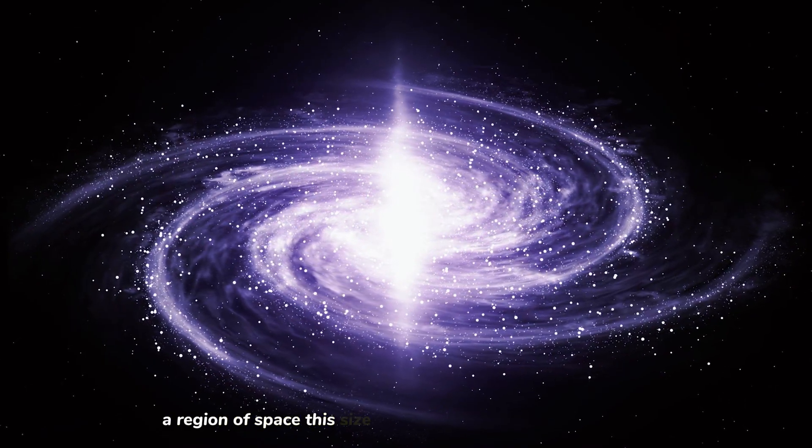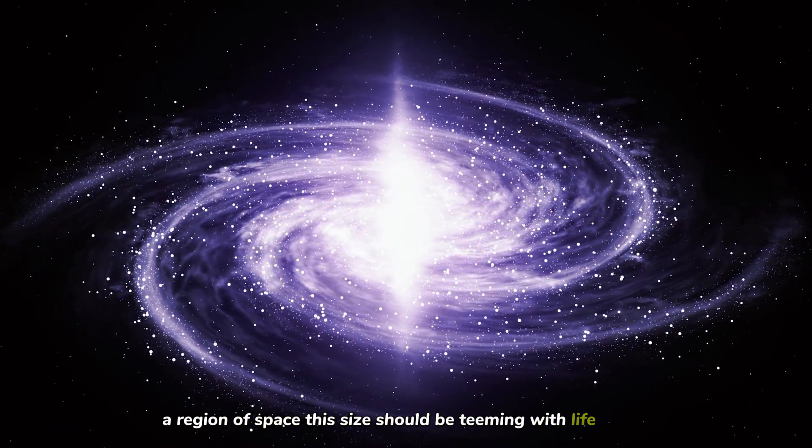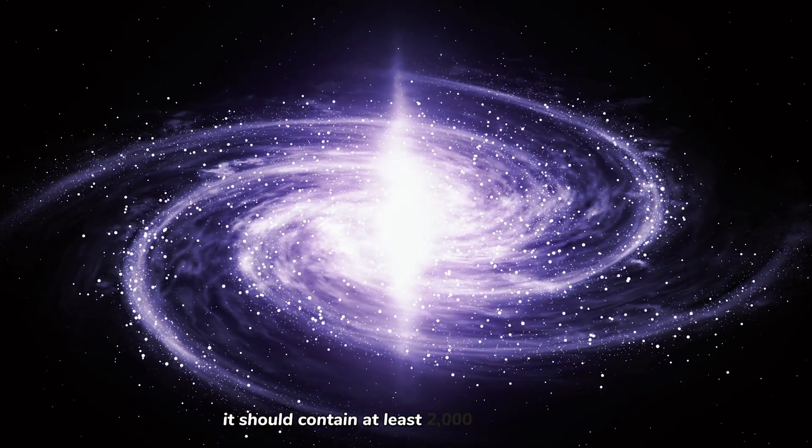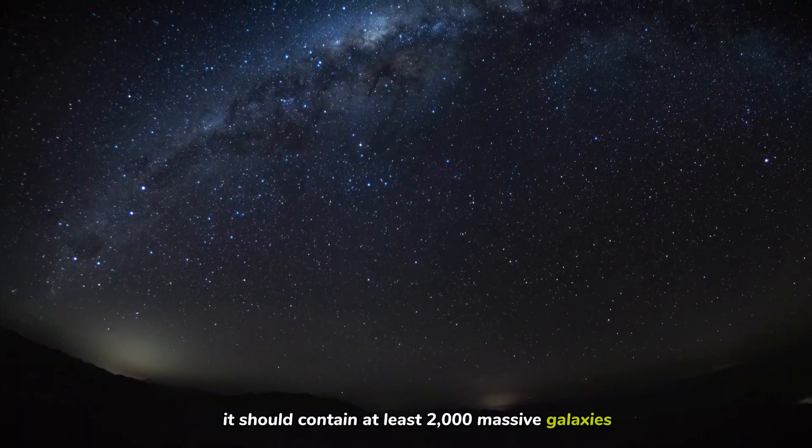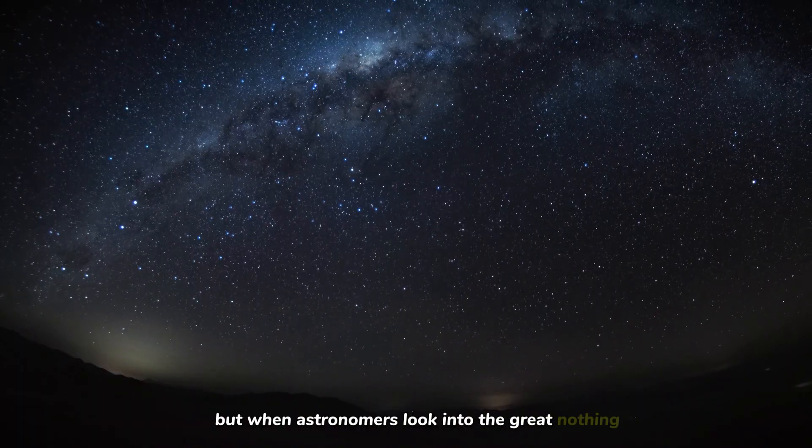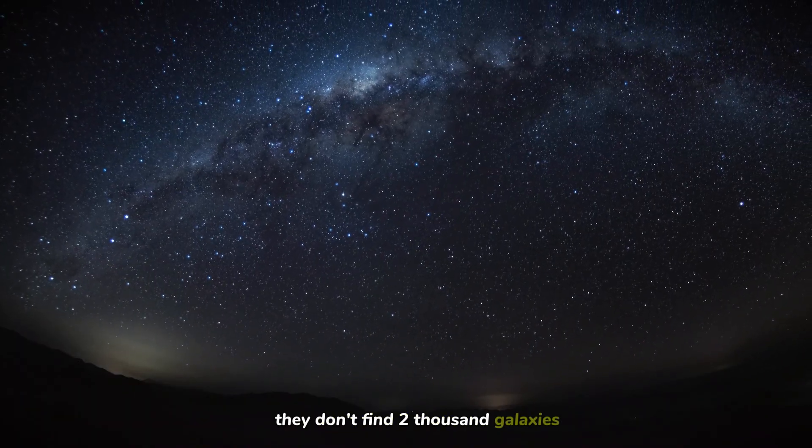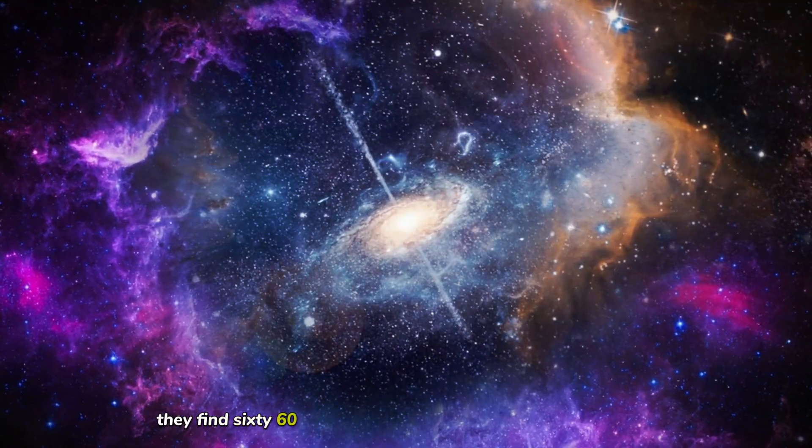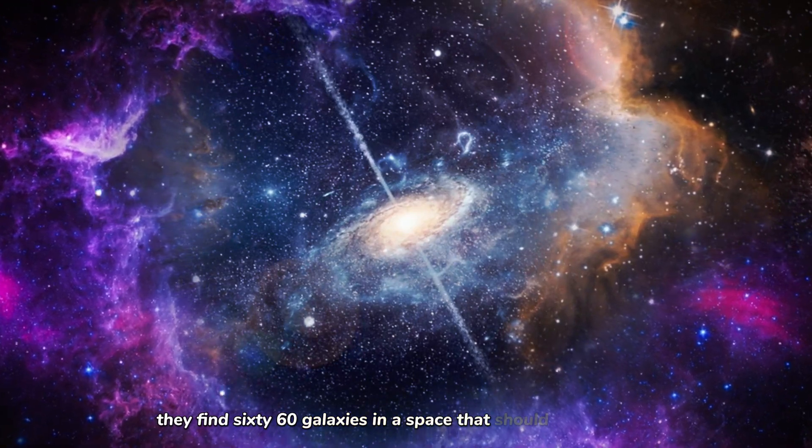Based on the density of the rest of the universe, a region of space this size should be teeming with life and light. It should contain at least 2,000 massive galaxies. But when astronomers look into the Great Nothing, they don't find 2,000 galaxies. They find 60. Sixty galaxies in a space that should hold thousands.